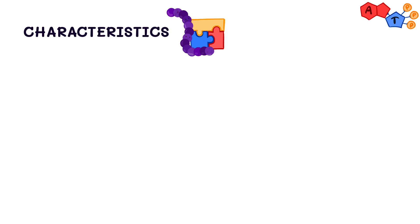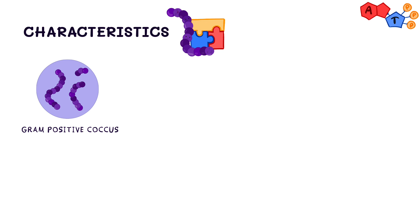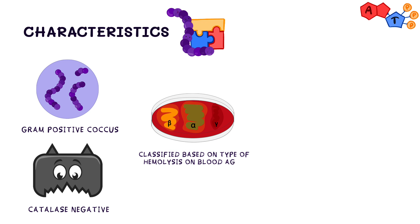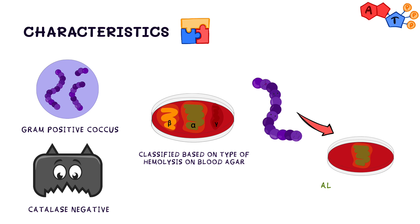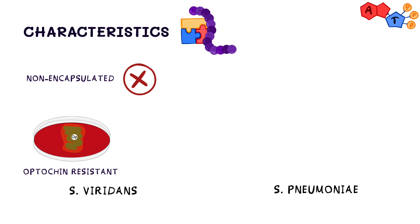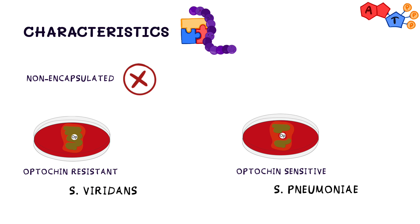Streptococcus viridans is a gram-positive coccus, and since it's a Streptococcus species, it is catalase negative. All Streptococci are classified based on the type of hemolysis on blood agar, and Streptococcus viridans shows alpha hemolysis, which means it causes partial hemolysis and will give a greenish discoloration on the blood agar. It is not encapsulated, it is optochin resistant — as compared to Streptococcus pneumoniae, which is optochin sensitive — and Streptococcus viridans is also bile insoluble.